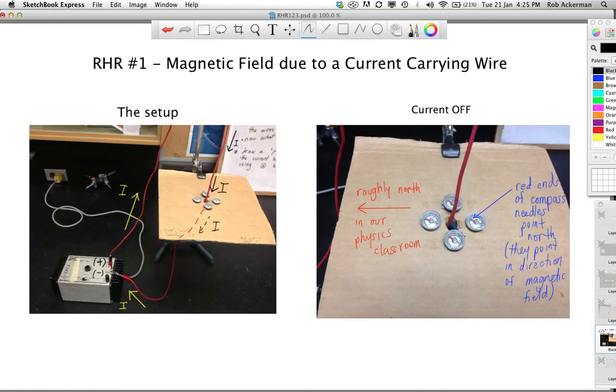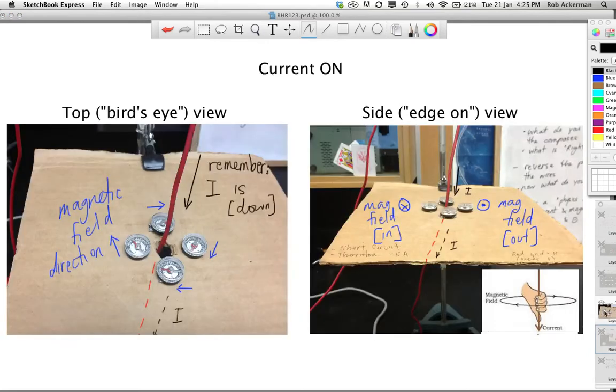Here's a close-up of what you saw. When the power was turned off, when there was no current, you saw that the needles were all pointing the same way. Red was pointing roughly north in the classroom, which makes sense. That is Earth's magnetic field that this was showing us.